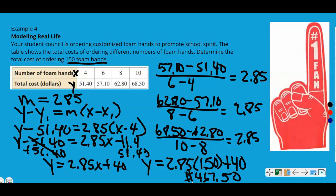So it says determine the total cost of ordering 150 foam hands. 150 foam hands will cost you $467.50. That actually doesn't sound too bad. You could sell them for a very reasonable cost and still make a little profit on those if you were selling those for school spirit. That is all for example four and all for this lesson. So if you have any questions, please let me know.